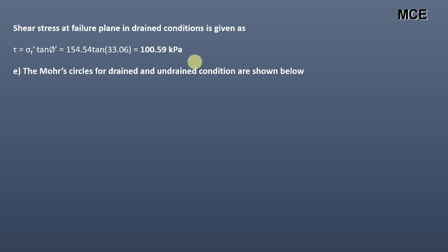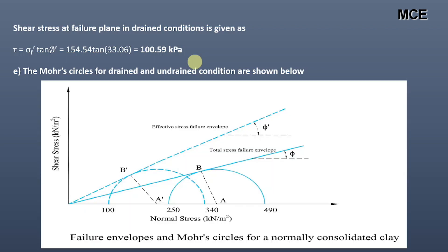The Mohr circle for drained and undrained conditions are plotted and shown below. This represents the failure envelope and Mohr circle for normally consolidated clay in drained and undrained conditions. The thick circle represents the Mohr circle in undrained condition, and the dashed circle represents the Mohr circle in drained condition. The major principal stress in undrained condition is 490 kilopascal and the minor principal stress in undrained condition is 50 kilopascal. The major principal stress in drained condition is 340 kilopascal and the minor principal stress in drained condition is 100 kilopascal.